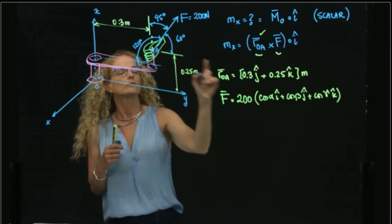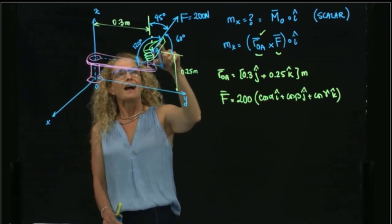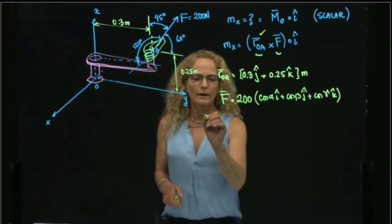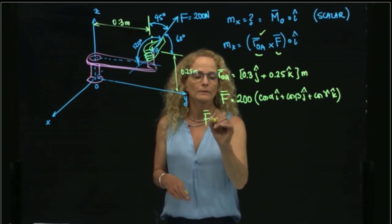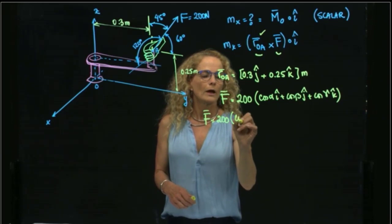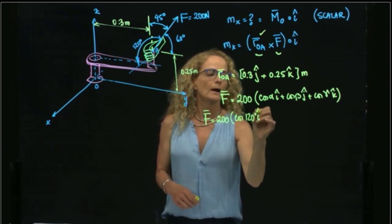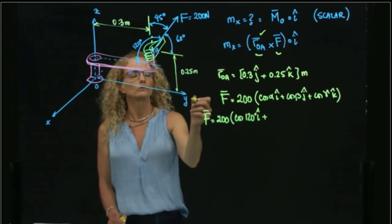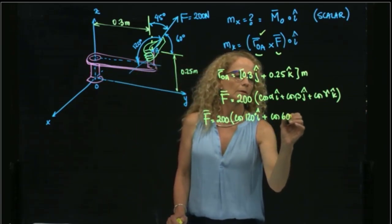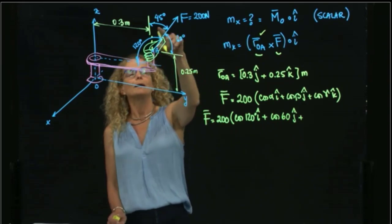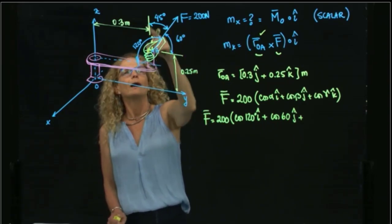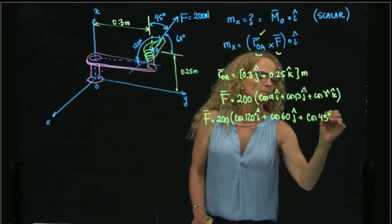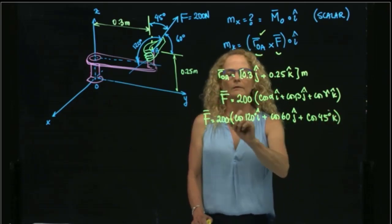This here goes all the way to here. So this is 120, as you see in the figure of the slide, is the angle between the axis X and the force F. Therefore, I can write as a vector, 200 cosine of 120 in I. For J, it's 60 degrees. This little line is parallel to J. So it will be cosine of 60. And the gamma is the angle between the force and the Z direction, which is 45.